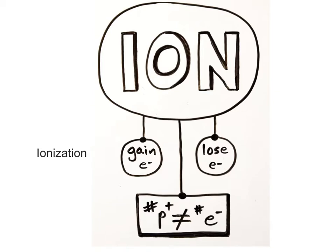Ions are represented by writing their chemical symbols with a positive or negative superscript that represents their charge. If an atom loses one or more electrons, it becomes a positively charged ion. If an atom loses one electron, its charge is now plus one. If it loses two electrons, its charge is now plus two.